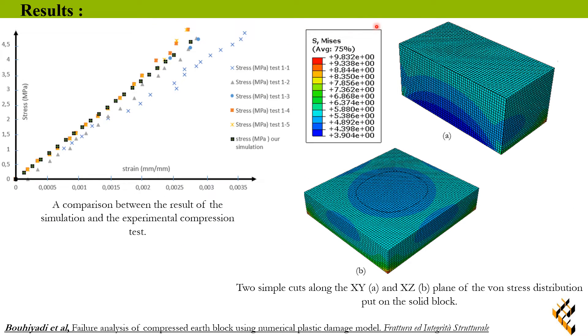The Von Mises stress distribution of the block shows us the stress in the side walls is greater than in the core. So, the force deformation is generated at the sides of the block and not in the core.